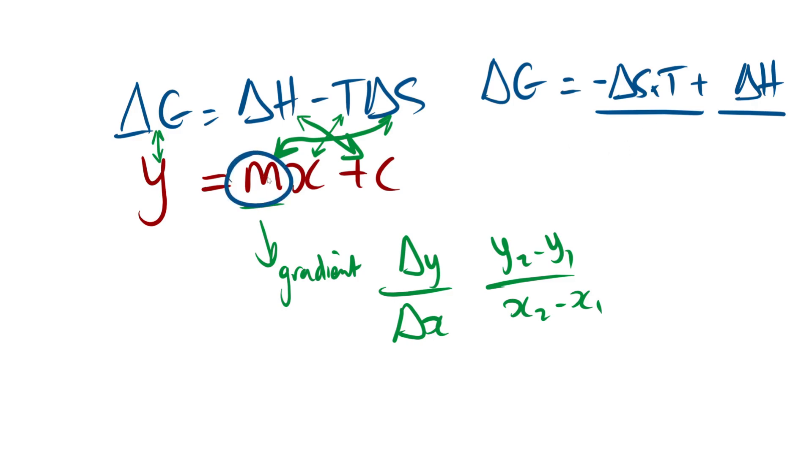And then we calculate the gradient from the graph, and then we say okay then our gradient equals our delta S, or minus delta S I should say, and then we can work out what our entropy change is from there, or whether we want to know what our Gibbs free energy is, whatever variable we want to calculate we can do this if we understand that we have to equate these two things.